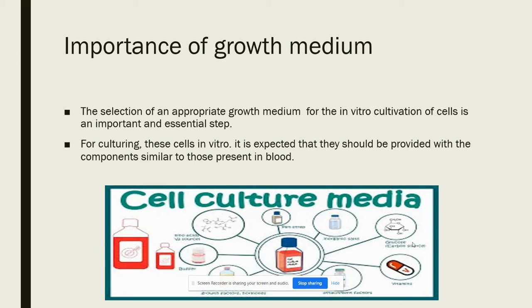For culturing cells in vitro, it is expected that we provide components similar to those present in blood. This is because in mammalian cells, cells receive nutrients from blood circulation. So we have to provide components similar to those present in blood so that proliferation can take place, with the help of various nutrients like amino acids, vitamins, etc., which we will discuss in later slides.